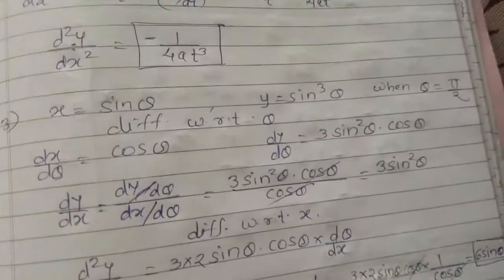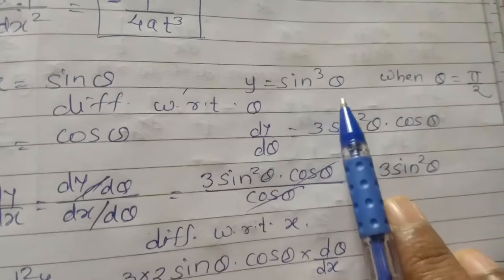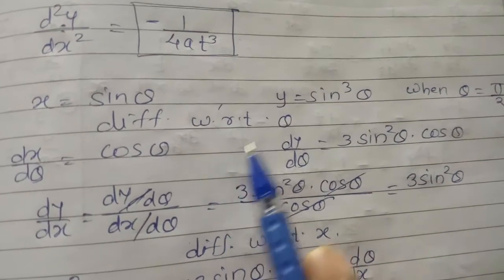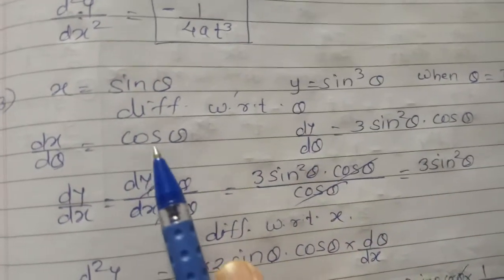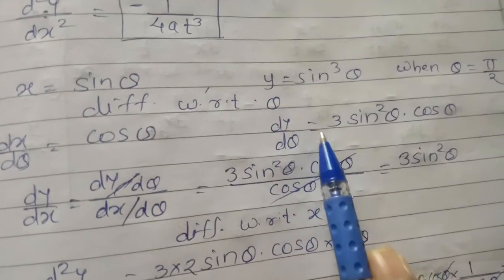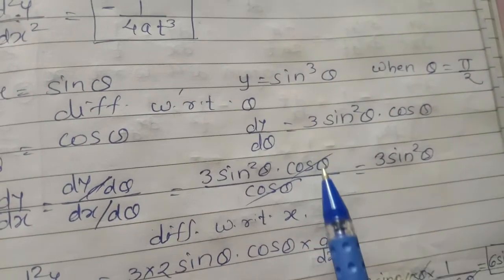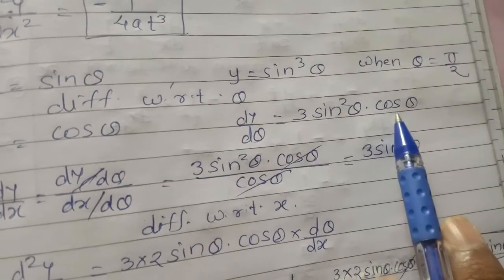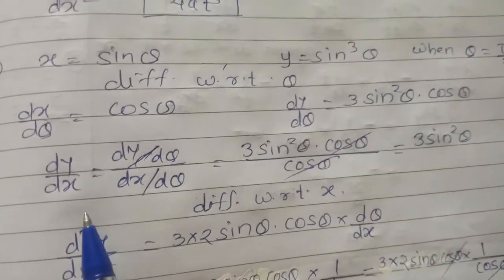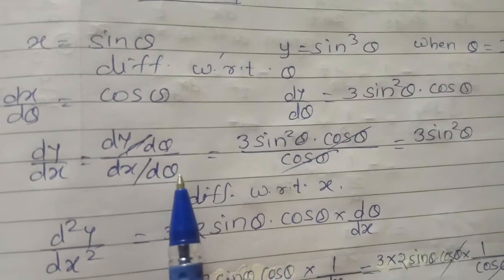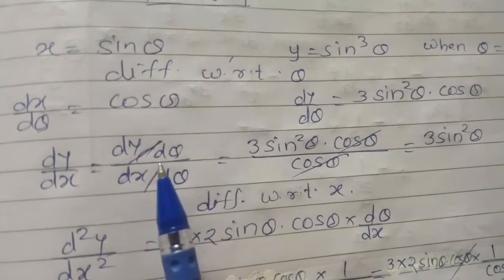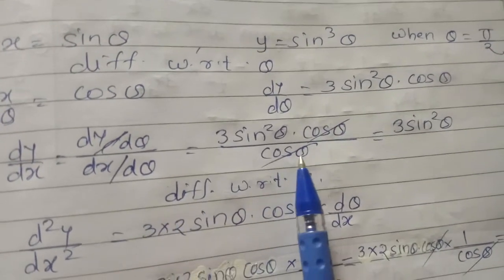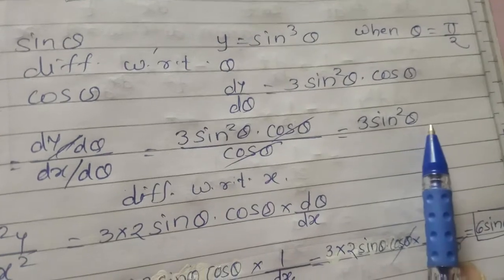Now see example number 3: x equals sinθ and y equals sin³θ, when θ equals π/2. Differentiating with respect to θ: dx/dθ equals cosθ, and dy/dθ equals 3sin²θ into cosθ (using chain rule). Now dy/dx equals dy/dθ upon dx/dθ equals 3sin²θ·cosθ upon cosθ. cosθ cancels, giving dy/dx equals 3sin²θ.